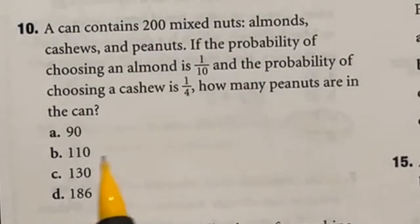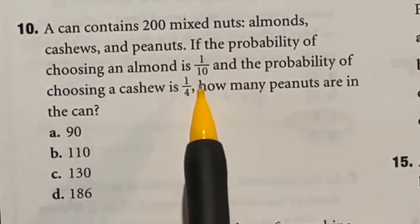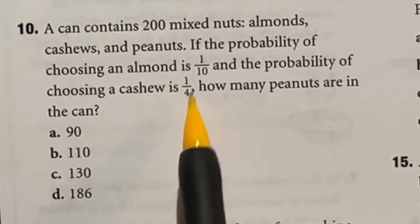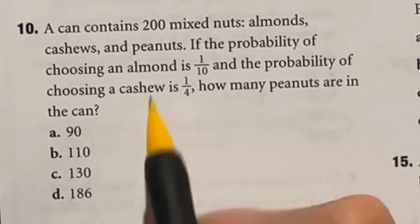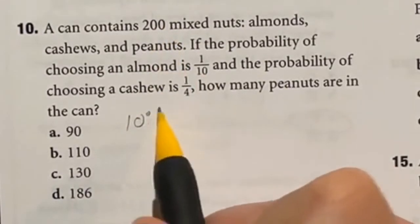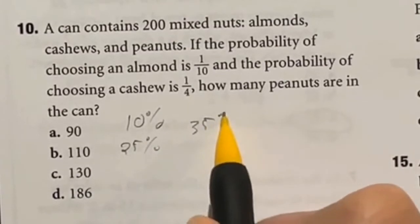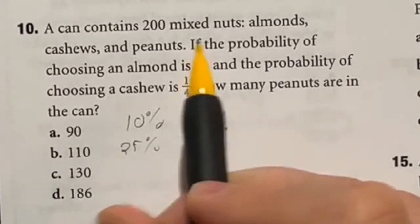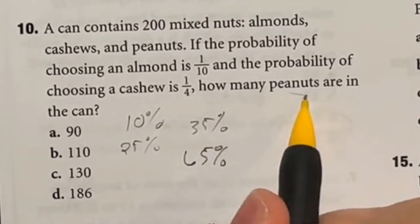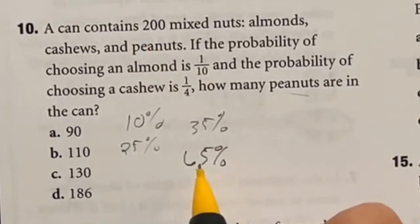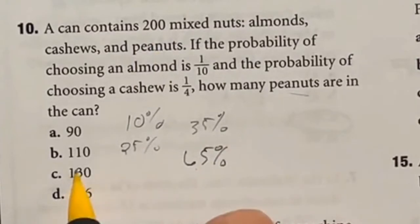So many different ways to do 10. Let's see if you choose the same way I do. So it says that you have 200 mixed nuts in a container. One-tenth of those are almond, and one-fourth of those are cashews. So how many total peanuts are in the can? Well, one-tenth would be 10%, and one-fourth would be 25%. So altogether, that's 35%. So 35% of the mixed nuts are accounted for, which means 65% are going to be peanuts. So what is 65% of 200? Well, 65 out of 100 is 65. Double that to get 200 would be 130. Answer C.